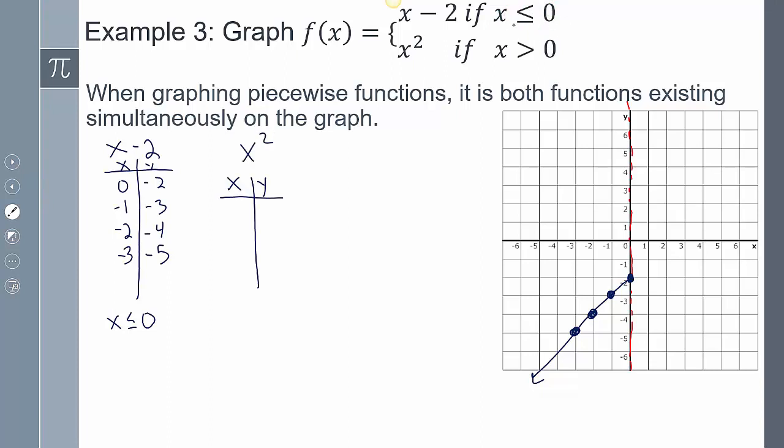Then for my x squared, the domain here is x is greater than 0. So 0, 1, 2, 3. I included it just because it helps me see where it starts on this line. But remember, because there's no equal to, it's going to be an open circle.